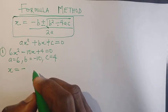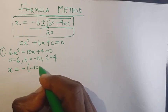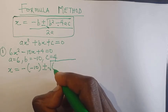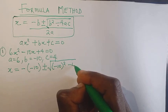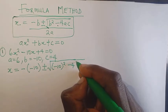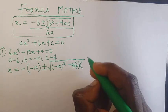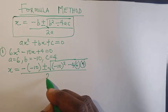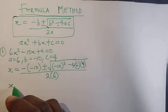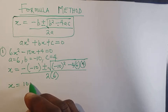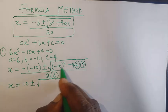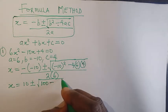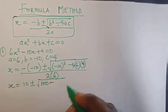The formula carries minus b, so we have minus of minus 10, plus or minus root of minus 10 squared, minus 4 times a which is 6, times c which is 4, all over 2 times a which is 6. Minus times minus is plus, leaving us with 10. Minus 10 squared is 100, then 4 times 6 is 24, and 24 times 4 is 96.